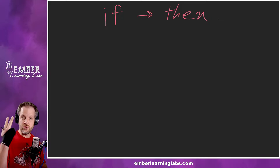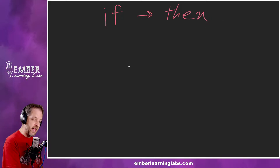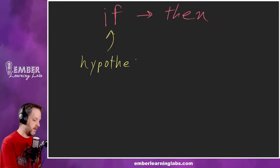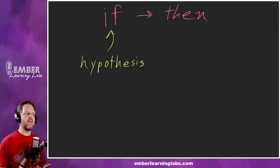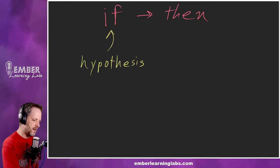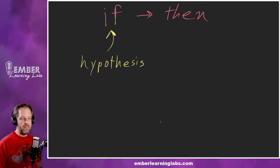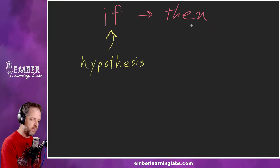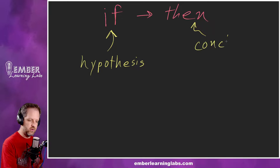A conditional statement has two parts. It has the beginning part — the if part — which is called the hypothesis. That's not quite the same as the hypothesis in science class; it doesn't have quite the same connotation, but it's sort of similar. In geometry, it is the beginning, the if part. And then the then part — the result — is called the conclusion.